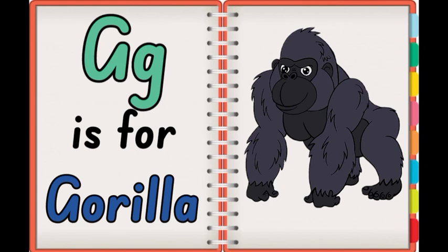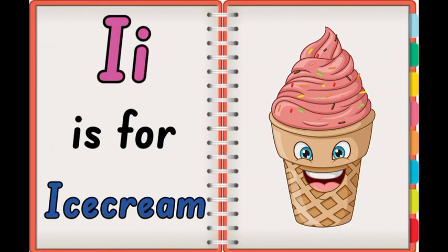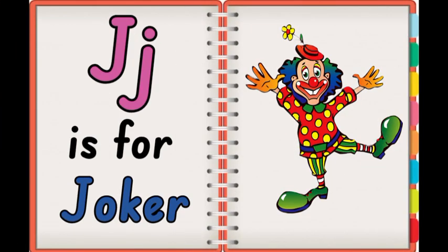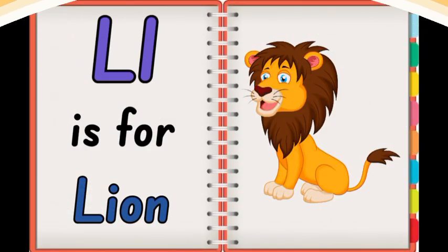G is for Gorilla. H is for Horse. I is for Ice Cream. J is for Joker. K is for Kangaroo. L is for Lion.